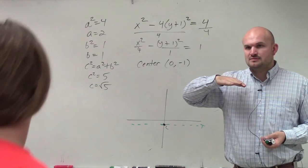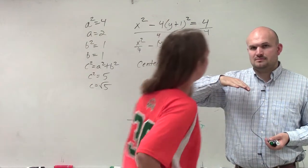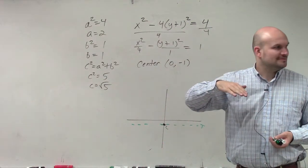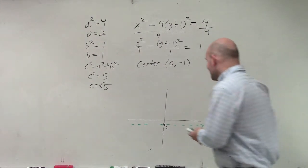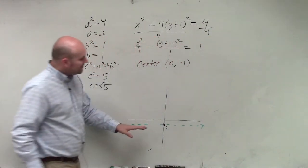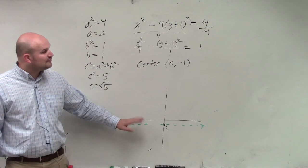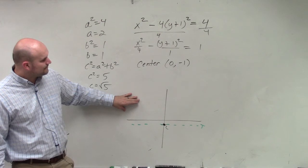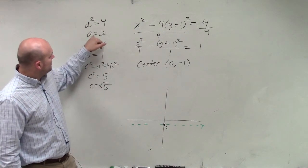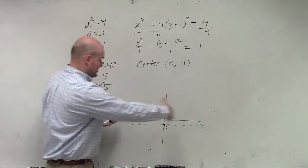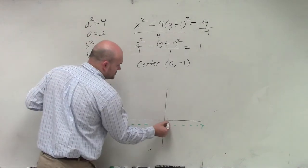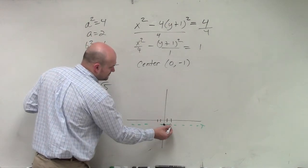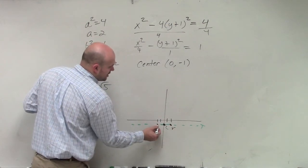What lies on the transverse axis? The transverse axis is going to lie horizontal. It's going to lie on the vertices as well as the foci. So we need to find our a, which is 2. That means it's going to be going left and right. So let's go to the right 2 and to the left 2.